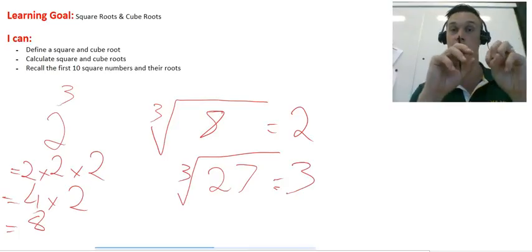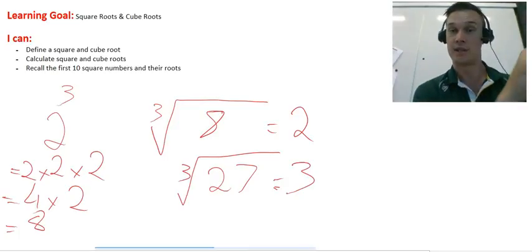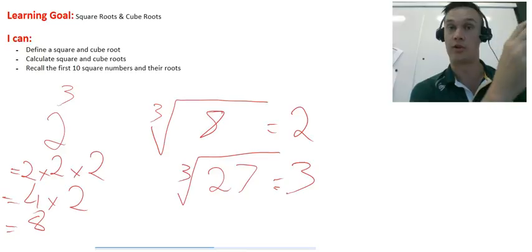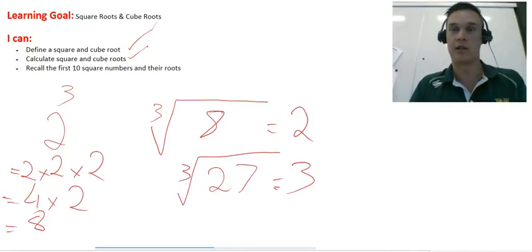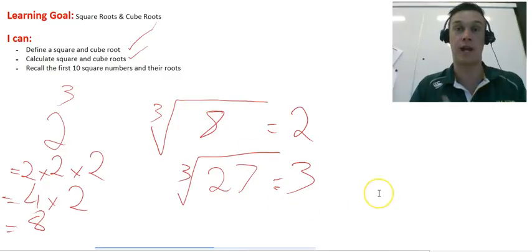Okay, so square rooting and cube rooting is the opposite to squaring a number and cubing a number. We know we can define it. We need to be able to calculate. I'm going to give you a quick clue here of how we can make sure we can recall especially our square numbers.